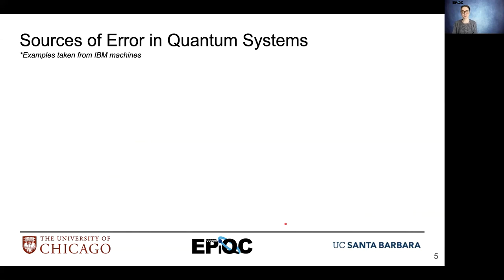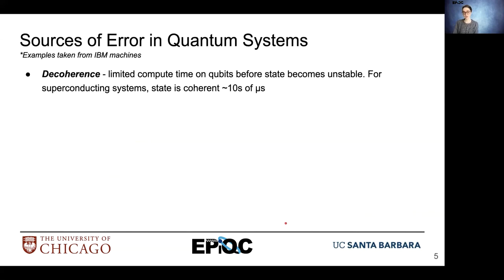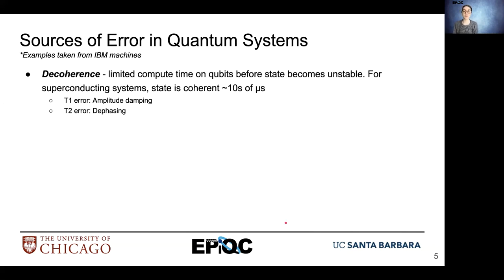Some example sources of error in quantum systems include decoherence. We have limited compute time before our state becomes unstable and too noisy to discern any meaningful results. For superconducting systems today, states stay coherent for tens of microseconds. Types of decoherence include T1 error, which is amplitude dampening — we go from an excited state to a ground state — and T2 error, which is dephasing, where we lose the phase aspect that's so important to quantum computing.